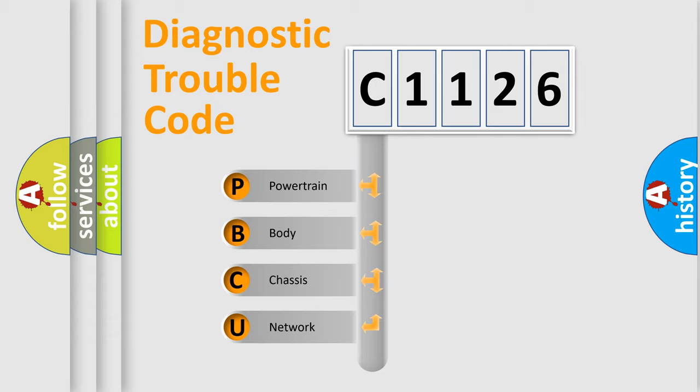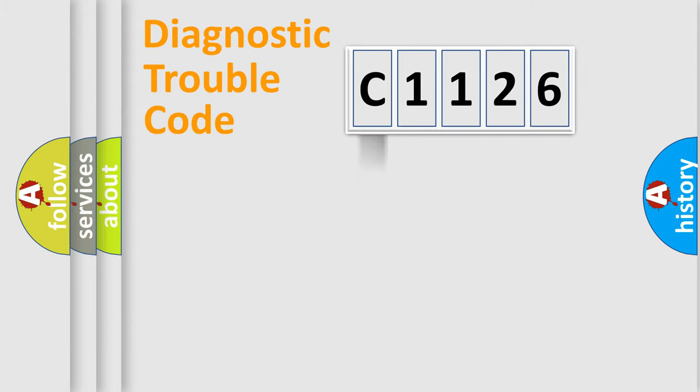We divide the electric system of automobile into the four basic units: Powertrain, Body, Chassis, Network.